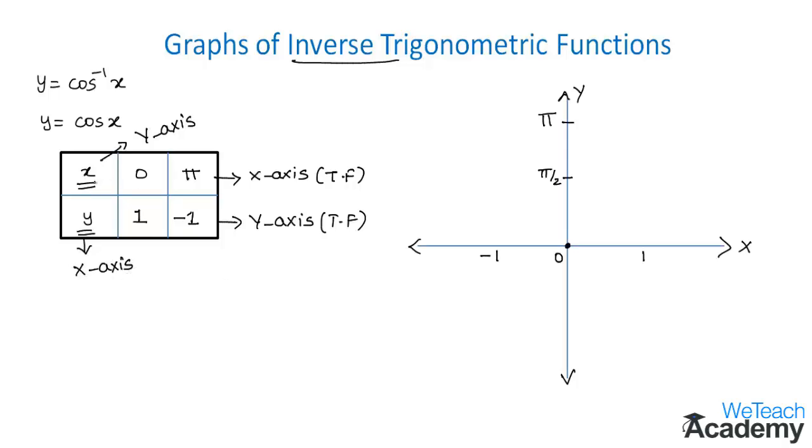Let us consider a coordinate plane and plot the ordered pairs. First is (0, 1), so here we get a point. Then by substituting π/2 in the equation we get the ordered pair (π/2, 0), so here we get a point. The next ordered pair is (π, -1).